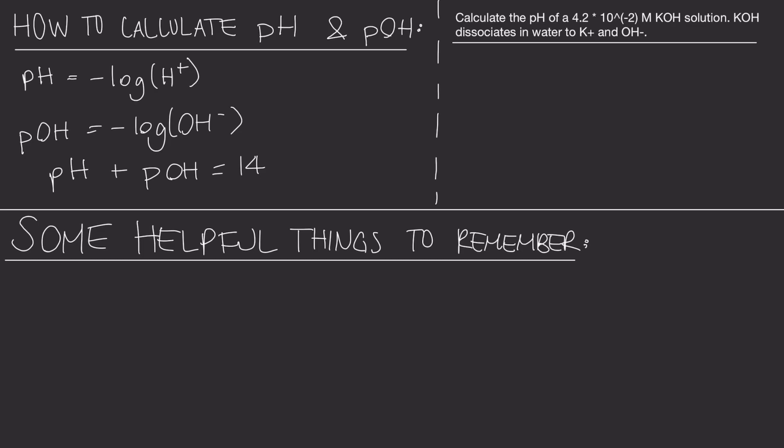Let's start out with this problem. Calculate the pH of a 4.2 times 10 to the negative 2 molar potassium hydroxide solution. Potassium hydroxide dissociates in water to K plus and OH minus.